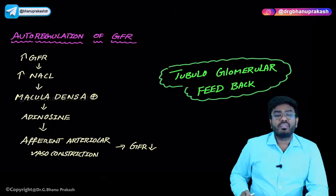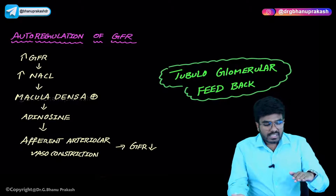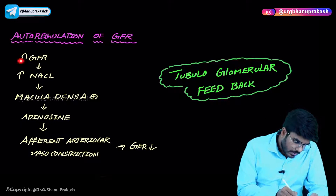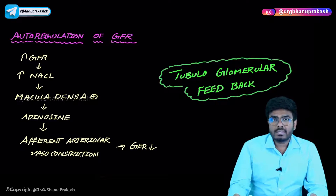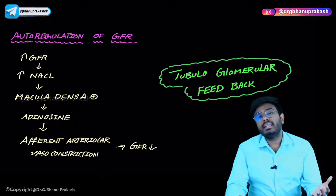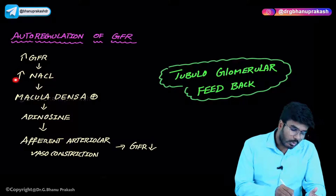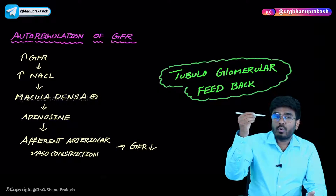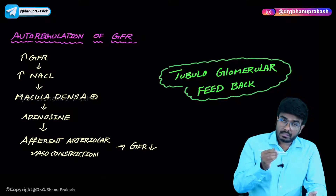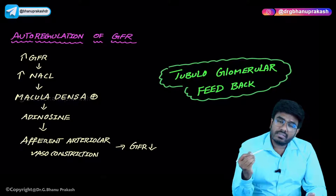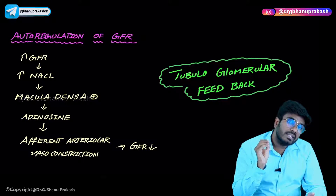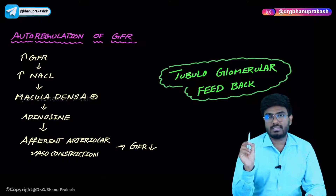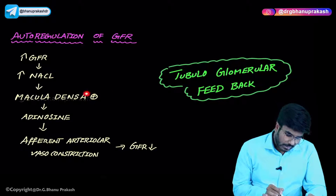Let's take an example where GFR is abnormally getting increased and needs to be brought back to normal. Whenever GFR increases, more fluid is filtered, and in that fluid there is more sodium and chloride. More sodium chloride comes into the proximal convoluted tubule, through the loop of Henle, up the ascending limb, and into the distal convoluted tubule. Macula densa cells sitting on the early part of the DCT are very sensitive to sodium levels.